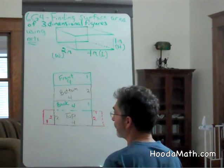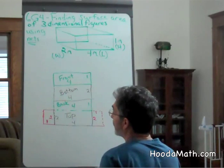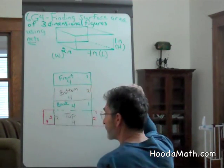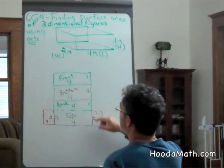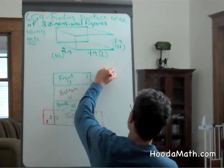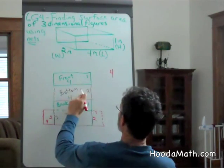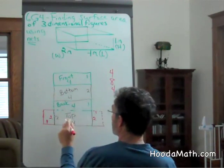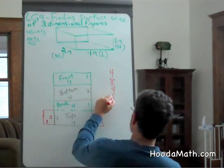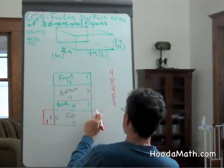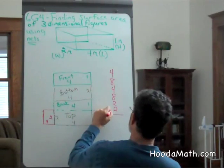So how do we find the surface area? The surface area is found by adding up the areas of all of these faces. So four times one is four. Four times two is eight. Four times one is four again. Four times two is eight. Two times one is two. Two times one is two. And we just add up.